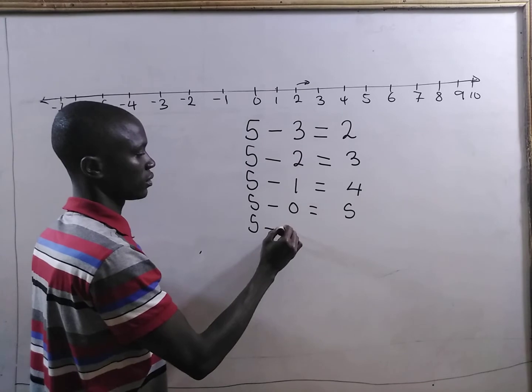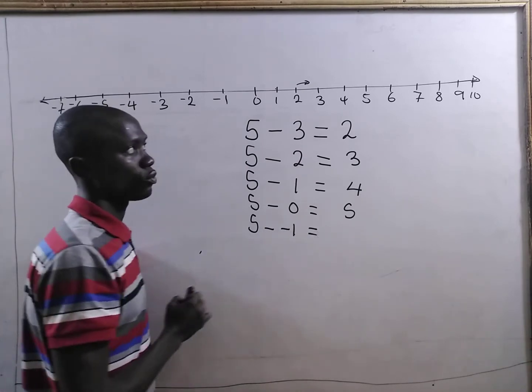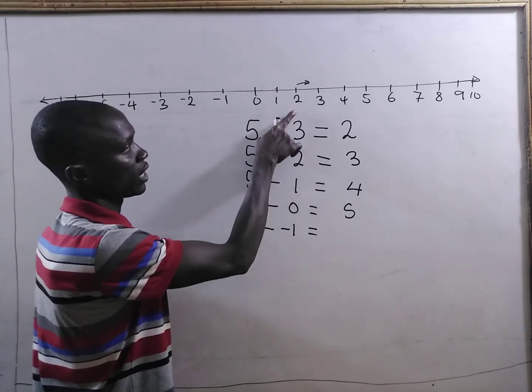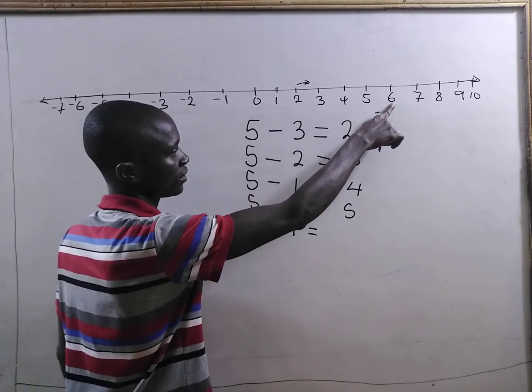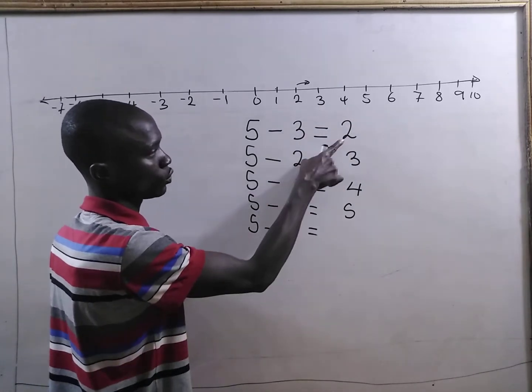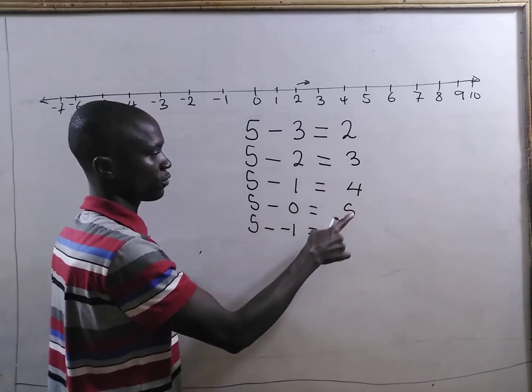5 minus negative 1. Then, where will our answer be? We have 2, 3, 4, 5, 6. You see the pattern? 2, 3, 4, 5. So, we move to positive 6.